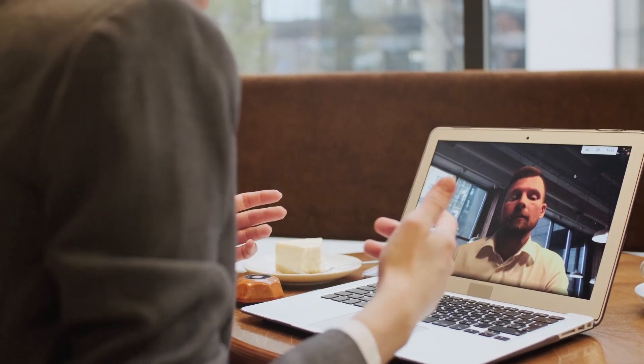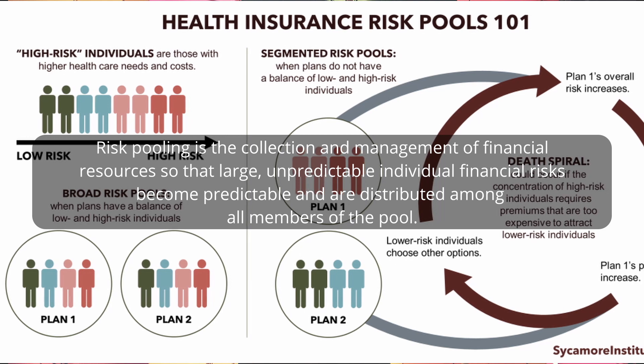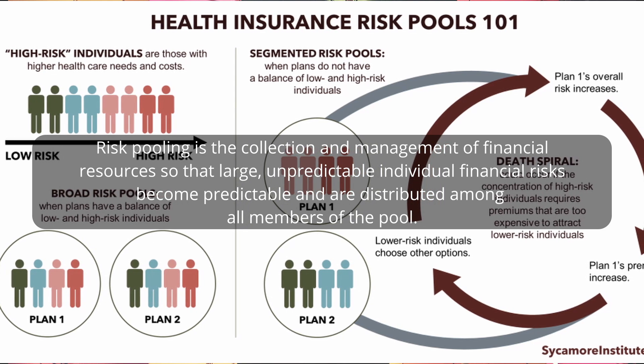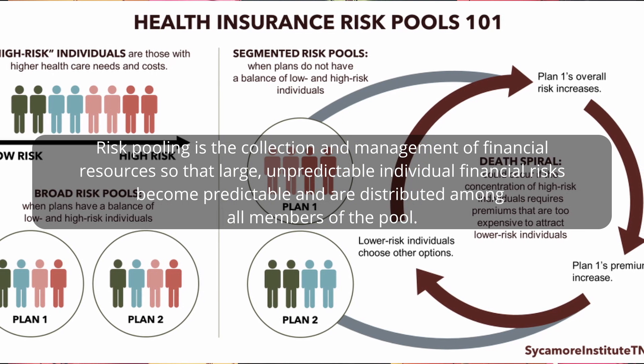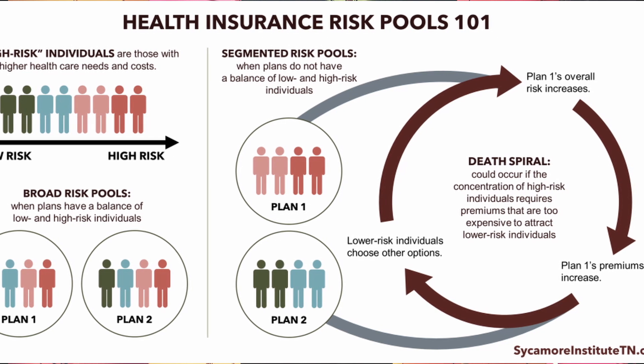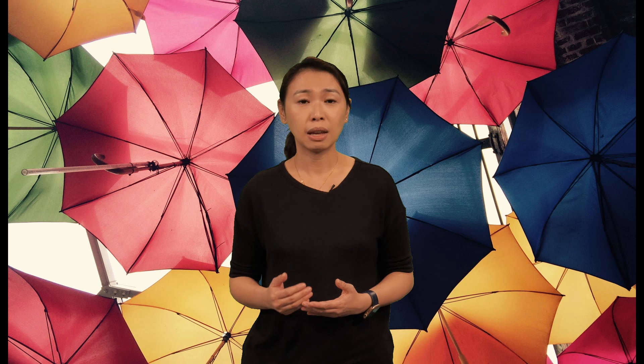Information asymmetry often occurs between the insured and the insurers. The insured often knows better than the insurer — for example, the insured know better of their health condition than the insurers. And the insured have no incentive to reveal their information. Riskier people are often more likely to buy insurance, and this creates a highly unstable risk pooling. Risk pooling is the collection and management of financial resources so that large, unpredictable individual financial risks become predictable and are distributed among all members of the pool. In this case, riskier customers pay less than they should, safer customers pay more than they should, and the risk premium is higher than it should be.